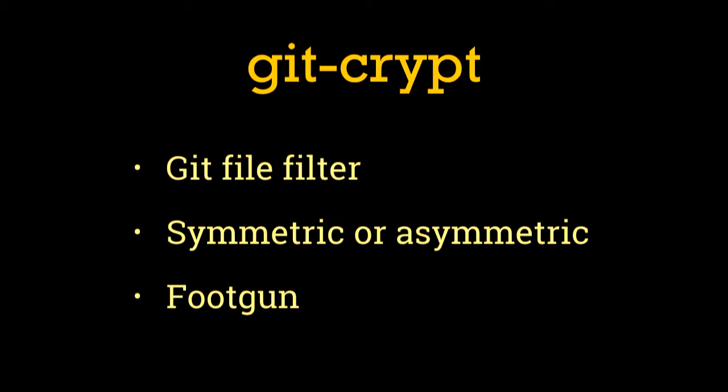The next step a lot of people reach for is wanting it to be encrypted, because encryption makes everything better, right? There are a lot of tools that do this integrating with Git. Git-crypt is probably the best of them. It can be used in either symmetric or asymmetric modes, but it doesn't change the underlying problem — it's full of foot guns. We've already talked about why Git doesn't give us good audit logs. It's also a whitelist system, so if you forget to mark that a file needs to be encrypted, you'll accidentally push it up in the clear to your Git repository.